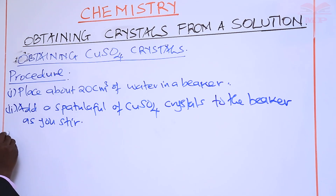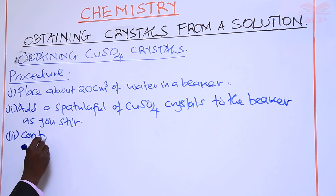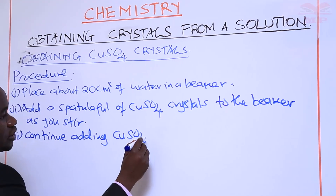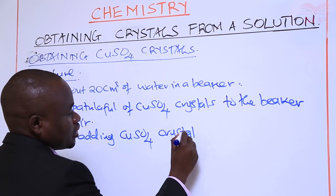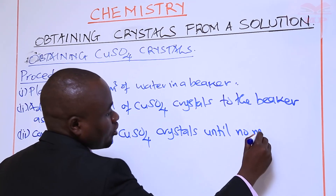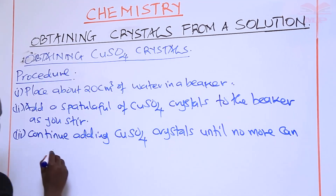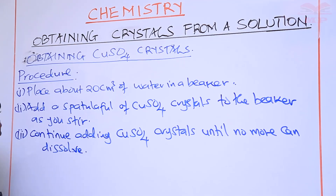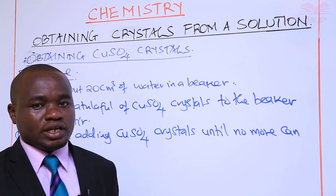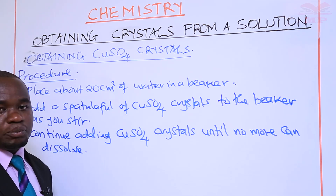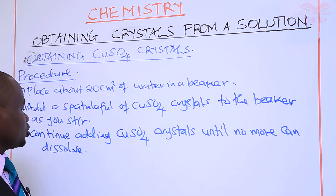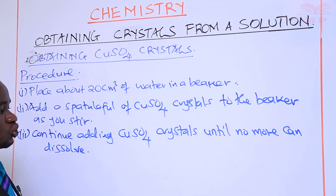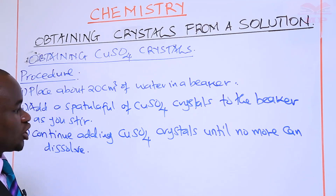Thirdly, continue adding copper sulfate crystals until no more can dissolve. You'll realize that at one point, when you add more and more copper sulfate, none of it will dissolve. We are seeing the point at which no more crystals are able to dissolve — we are seeing that the solution has reached a point of saturation. Such a solution we are going to call a saturated solution: one in which no more solute can dissolve.